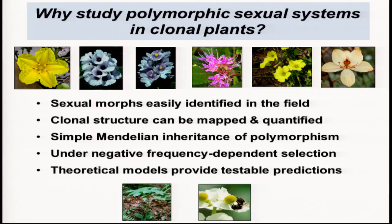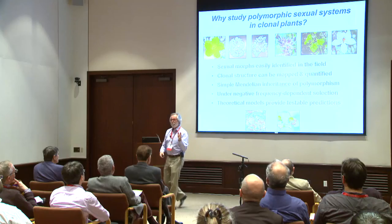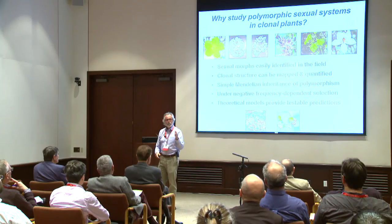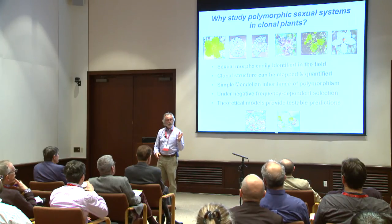I'm going to be talking about these stylar polymorphisms. Some are distylous with two morphs; these three have three morphs and are called tristylous. And then there is a very curious polymorphism involving mirror image flowers, called enantiostyly.